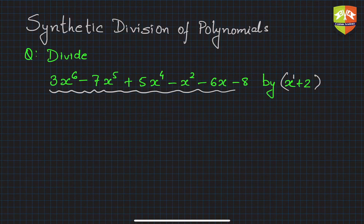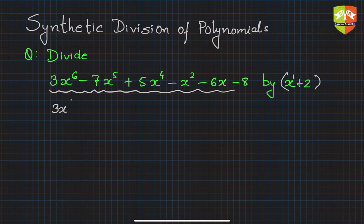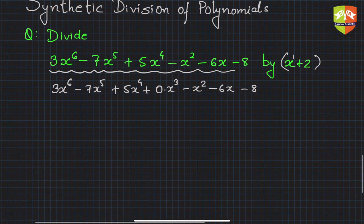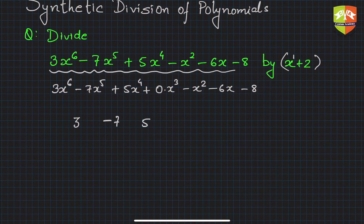First, you have to ensure that the polynomial is complete — that means all powers are present. If there is no x cubed term, insert 0x³. So the complete polynomial becomes 3x⁶ minus 7x⁵ plus 5x⁴ plus 0x³ minus x² minus 6x minus 8. Once that is done, write all the detached coefficients: 3, -7, 5, 0, -1, -6, -8.